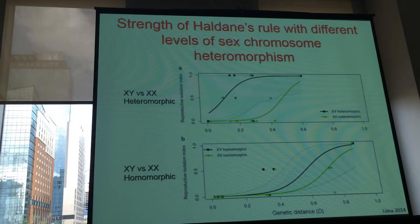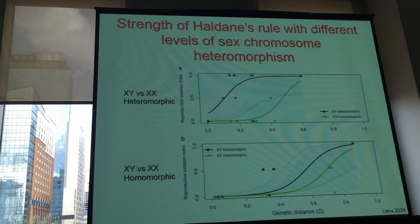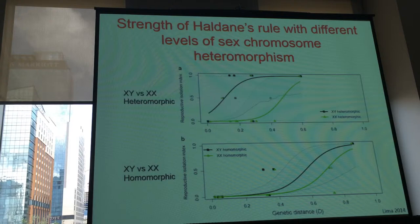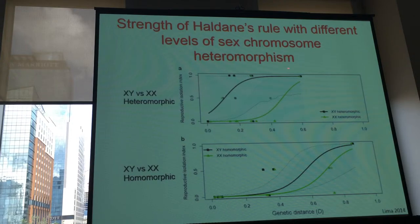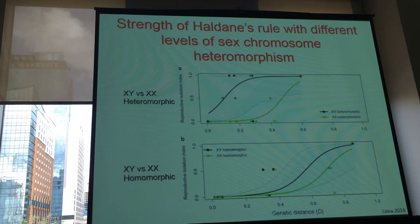So how does this affect the strength of Haldane's rule? On the x-axis you have the strength of intrinsic postzygotic isolation — a value of one means that in the reciprocal crosses males and females are completely sterile or inviable, zero means the F1 hybrids are fine. On the x-axis you have genetic distance between the taxa hybridizing, and each point is a cross for different vertebrate, invertebrate, and plant taxa. In black you have the heterogametic sex, in green the homogametic sex. On top is the heteromorphic sex chromosome class and on the bottom the homomorphic sex chromosome class. Haldane's rule is stronger when you have more heteromorphic sex chromosomes — the lines are further apart — and with homomorphic sex chromosomes the lines come together.